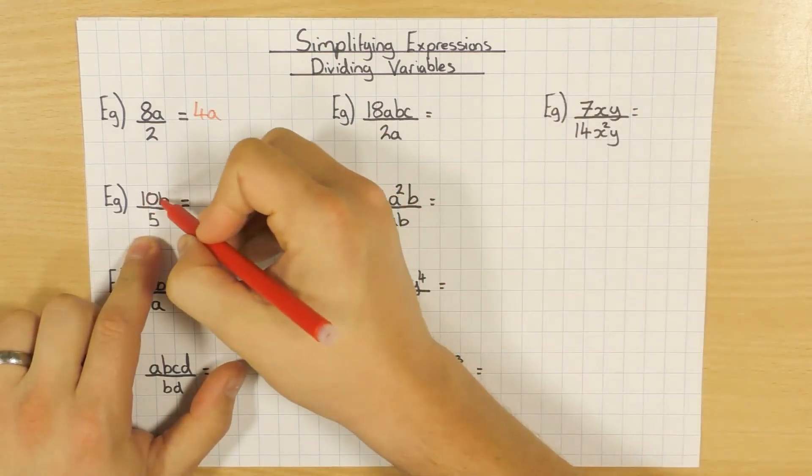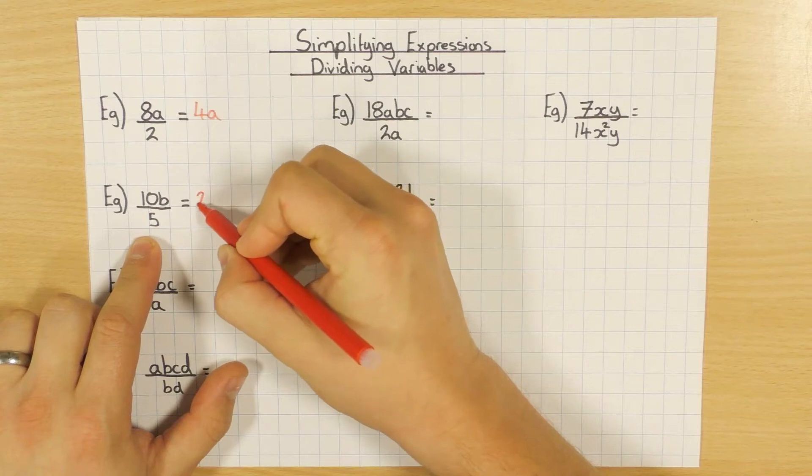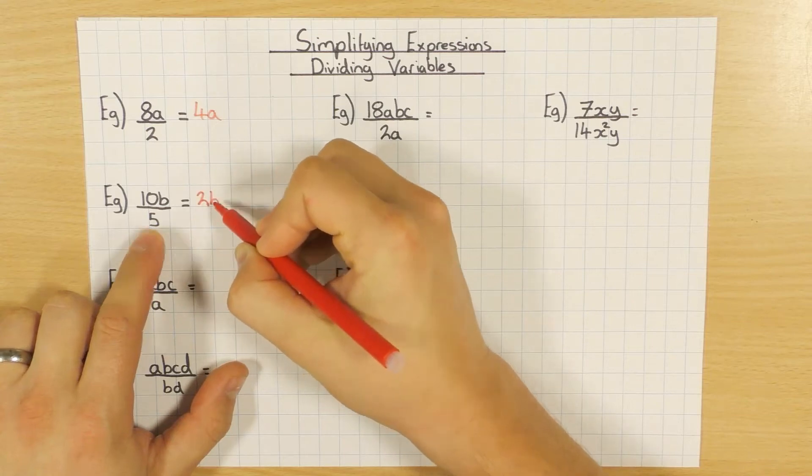Same thing here, 10b divided by 5, I'm just going to divide the numbers. 10 divided by 5 is 2, and I'm left with a b.